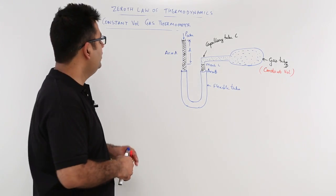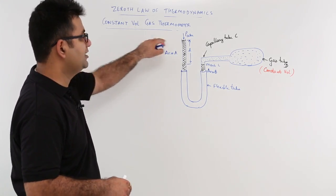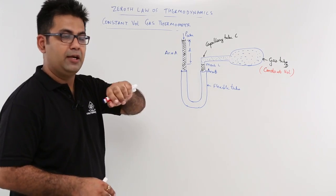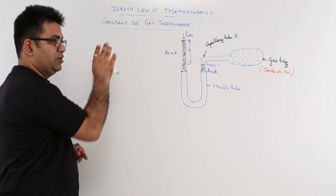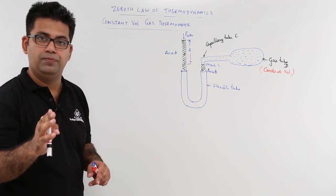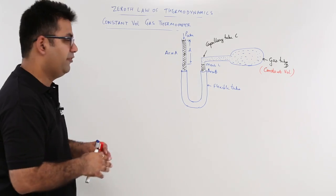Now let us talk about the constant volume gas thermometer. In this, the volume is a constant value — the volume does not change.